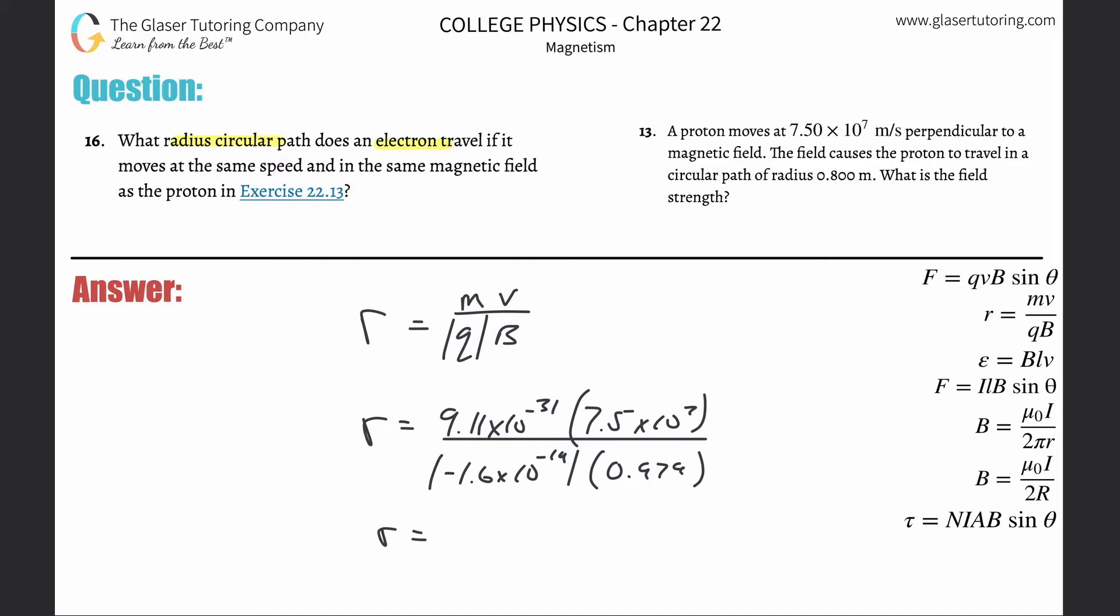Now all we have to do is calculate: 9.11 times 10 to the minus 31 multiplied by 7.5 times 10 to the seventh, divided by 1.6 times 10 to the minus 19th multiplied by 0.979. And here we go - the radius of curvature is about 4.36 times 10 to the minus fourth meters.